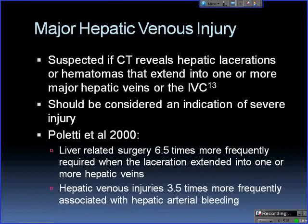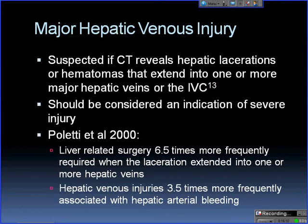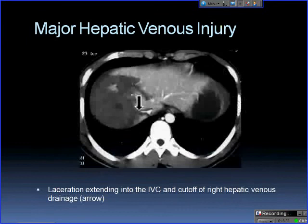Major venous injury should be suspected if hematoma extends into the area of a hepatic vein. A study by Paletti in 2000 showed that liver-related surgery was six-and-a-half times more frequently required when laceration extends into one or more major hepatic veins. He also found hepatic venous injury was three-and-a-half times more frequently associated with hepatic arterial bleeding — so if you have venous injury, arterial bleeding is much more likely.